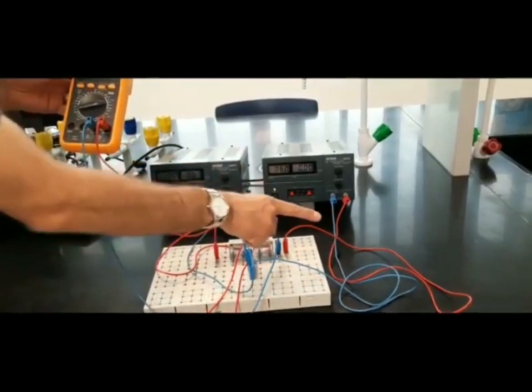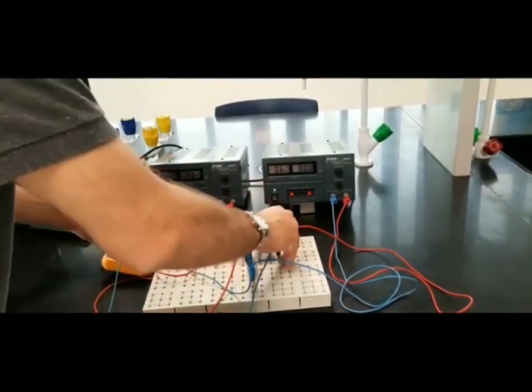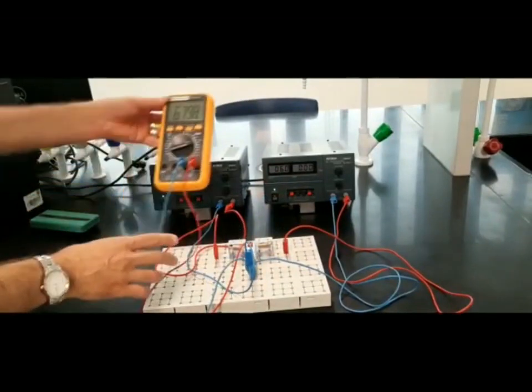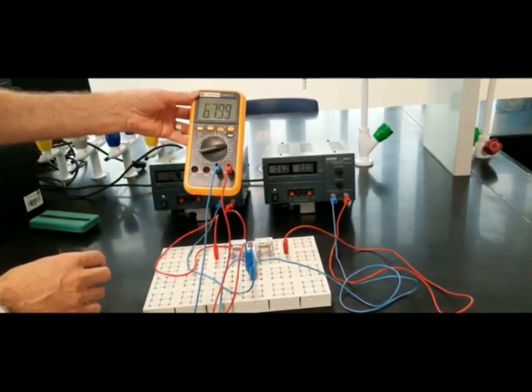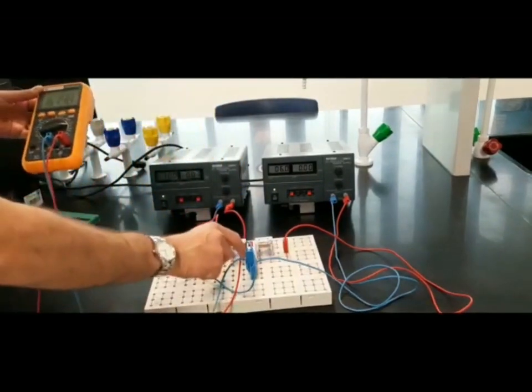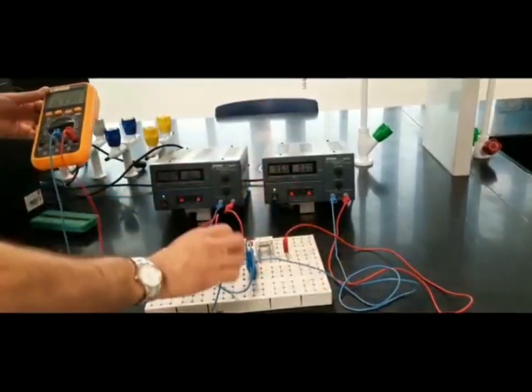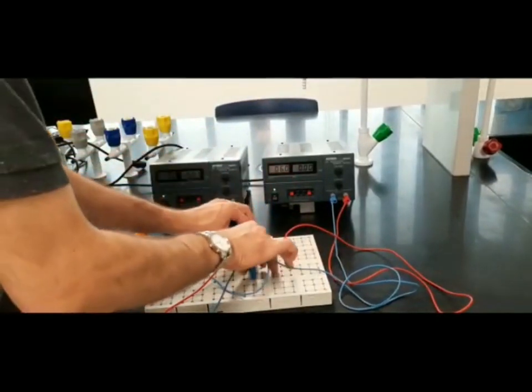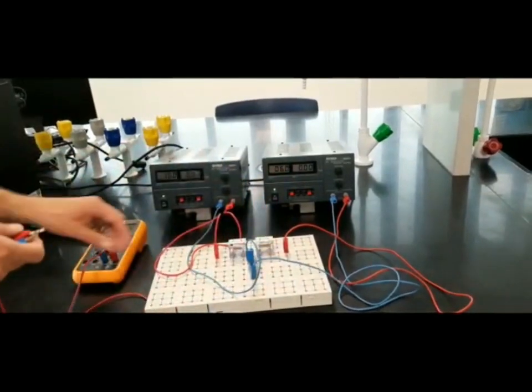Now I switch to the third resistance. It says 6.799, around 6.8 volts. The positive terminal is up, the negative terminal is down. These are the three values of the potential differences.